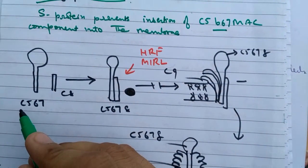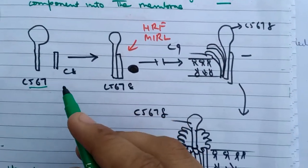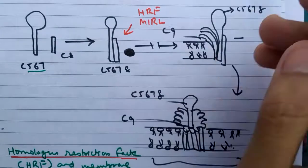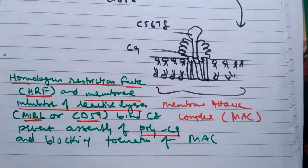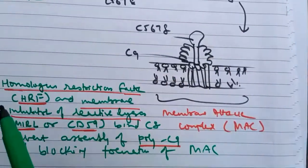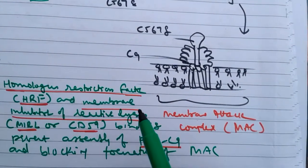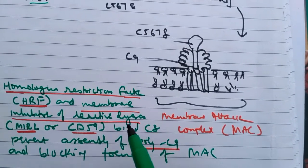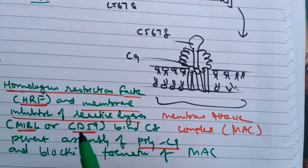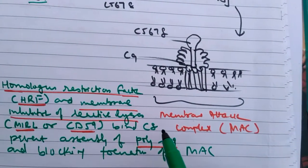Next, C5B67 and C8 form C5B678. Here is the homologous restriction factor, that is HRF, and membrane inhibitor of reactive lysis, MIRL or CD59, bind at the C8 and prevent its assembly with poly-C9 and inhibit the complete formation of the MAC.